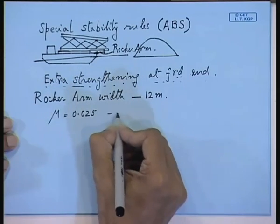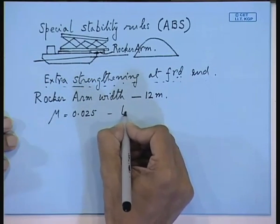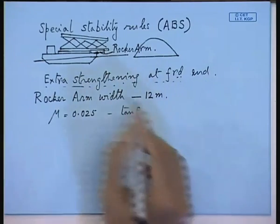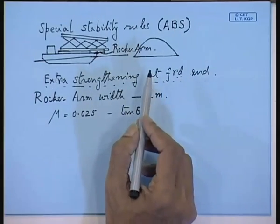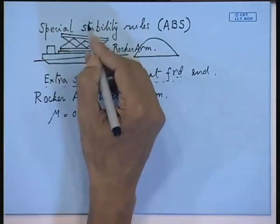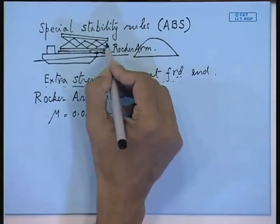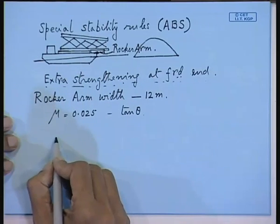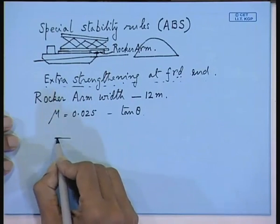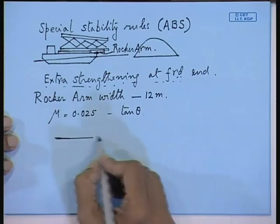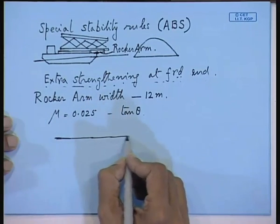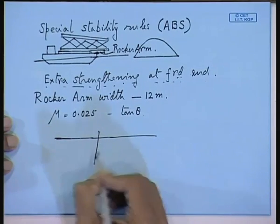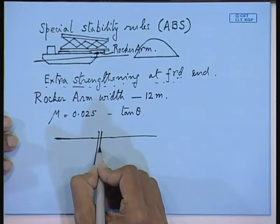You trim the barge until the jacket starts sliding. The jacket is going to slide with the narrow end first. Then the process of launching begins, and you have to upend the jacket. The jacket has to end up in the upright mode after it has been launched.